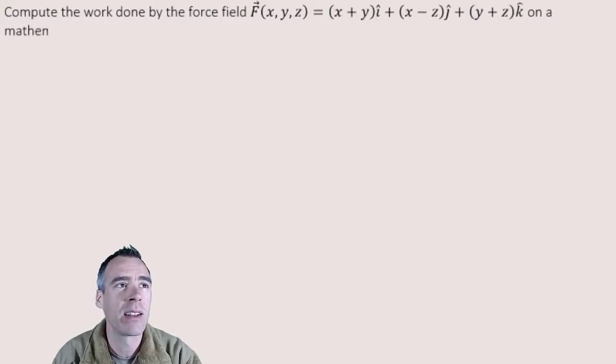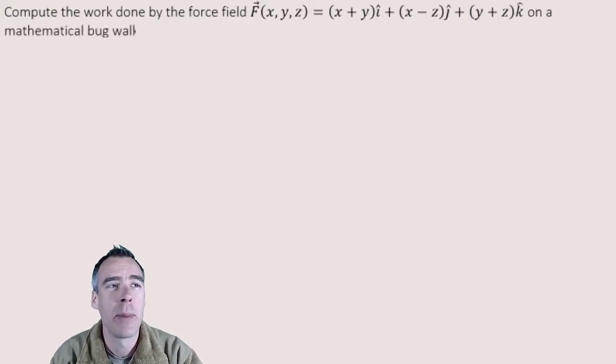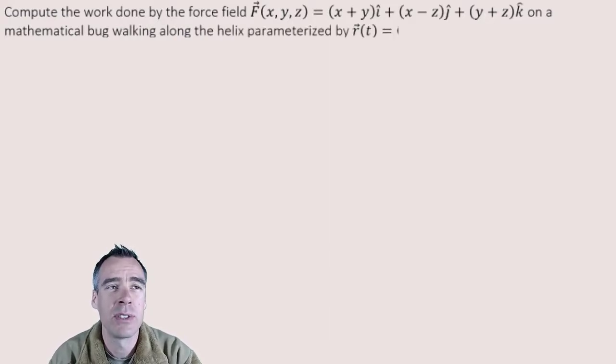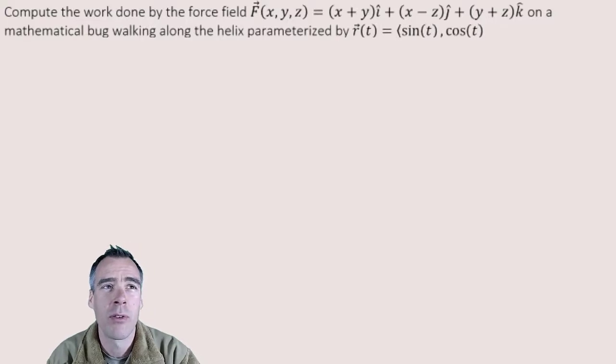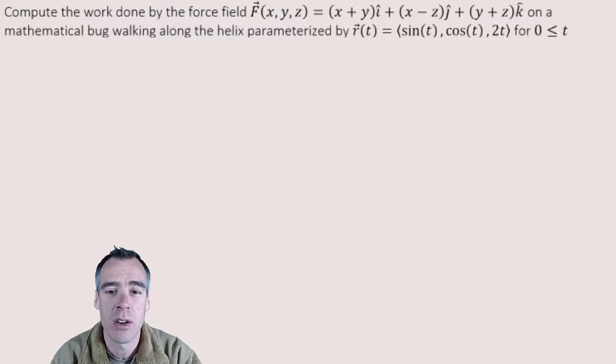On a mathematical bug walking along the helix parameterized by the position vector function R of T equals sine of T, cosine of T, and 2T for the X, Y, and Z components for our T value ranging from 0 to 3π.